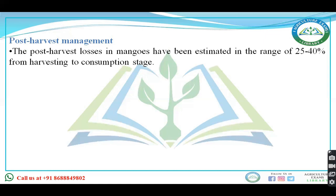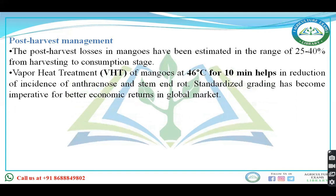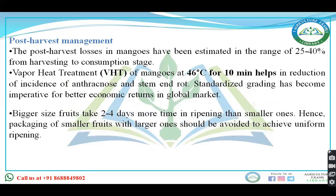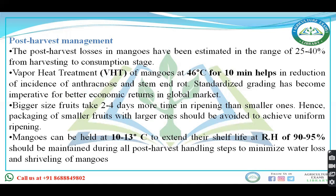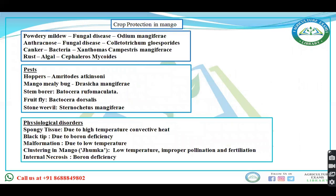Post-harvest losses in mango have been estimated in the range of 25 to 40 percent. Vapor heat treatment at 46 degrees Celsius for 10 minutes helps in reduction of diseases like anthracnose and stem end rot. Bigger size fruits take 2 to 4 times more time in ripening than smaller ones; hence packing of small fruits with larger ones should be avoided for uniform ripening. Mangoes should be stored at 10 to 13 degrees Celsius with a relative humidity of 90 to 95 percent.